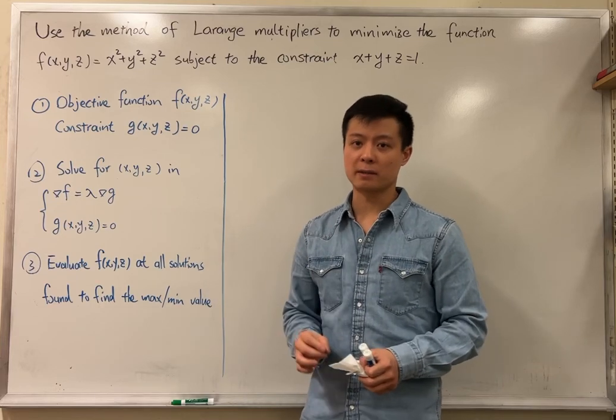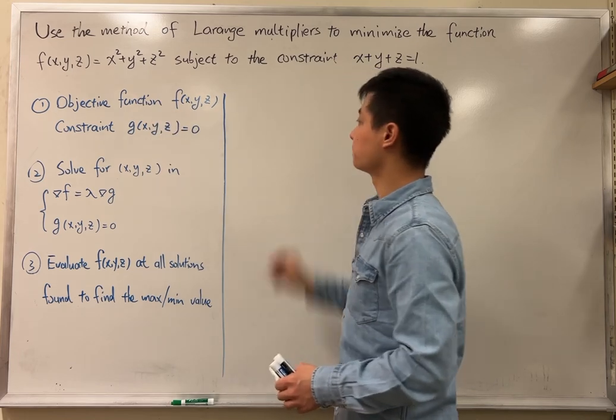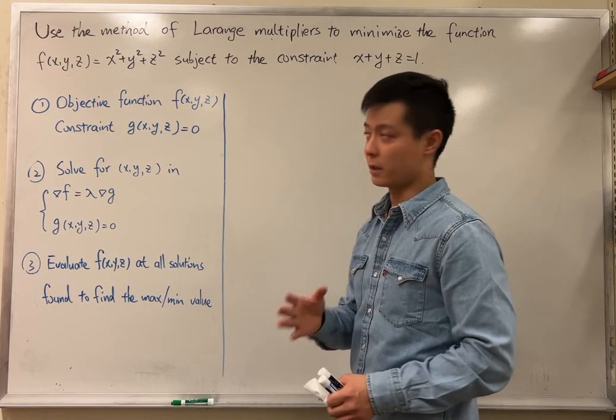Use the method of Lagrange multipliers to minimize the function subject to the constraint. To begin with, let's take a look at the outline.